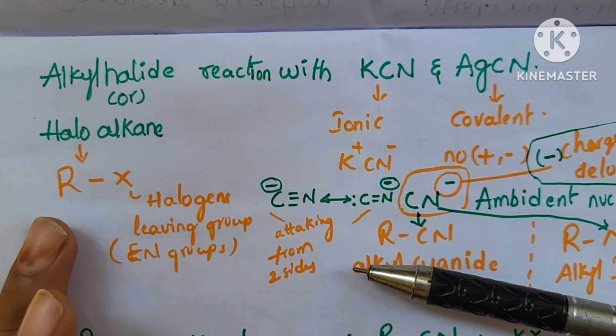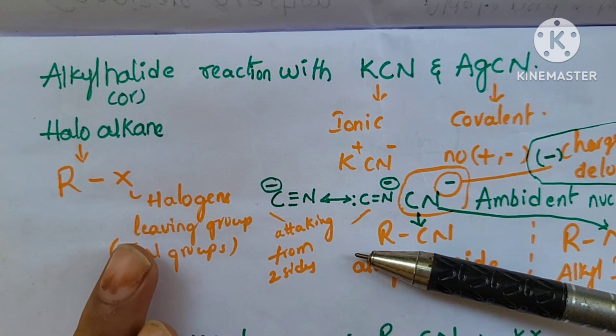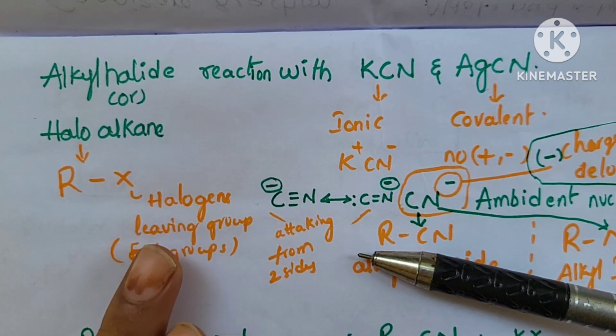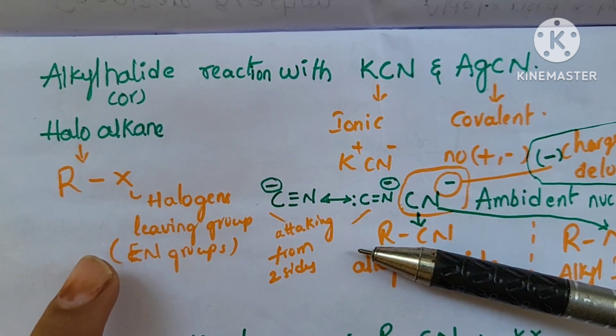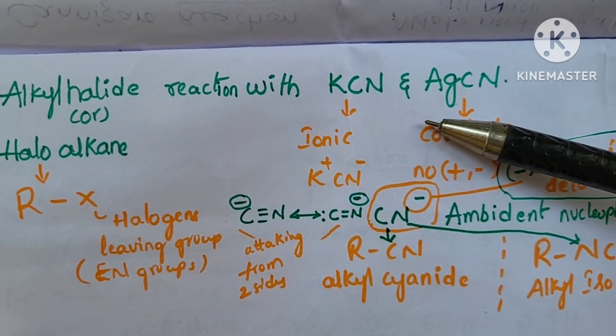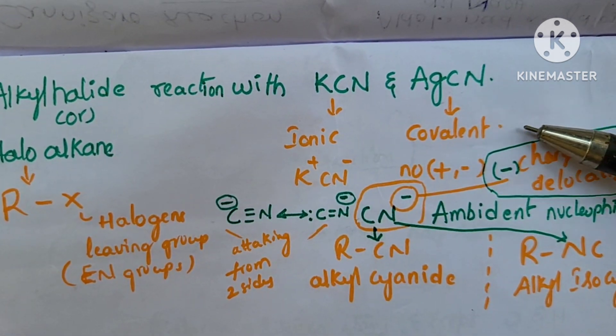We will compare the electronegativity. KCN is an ionic compound and AgCN is covalent.